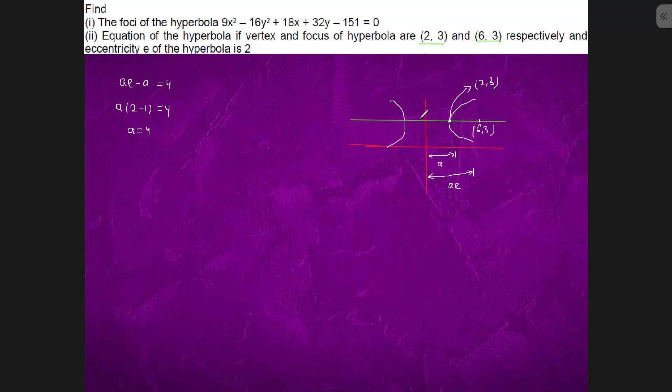So the center will come out to be minus 2. 2 minus 4 which is minus 2 comma 3. So the center is minus 2 comma 3.